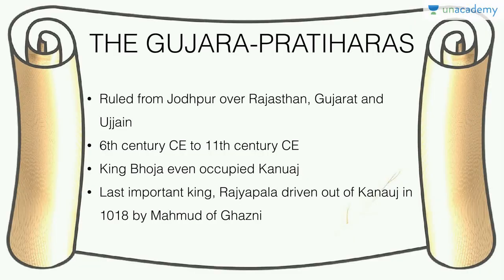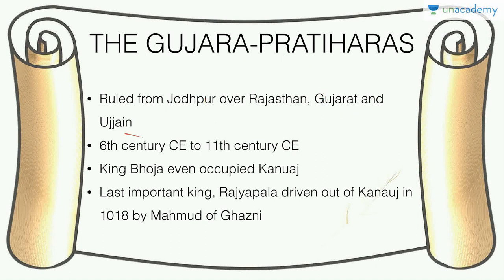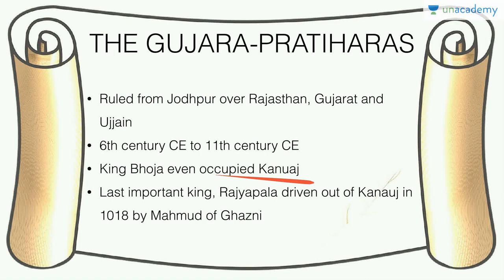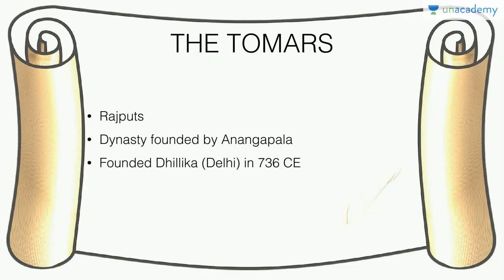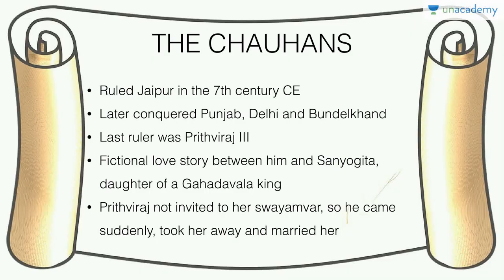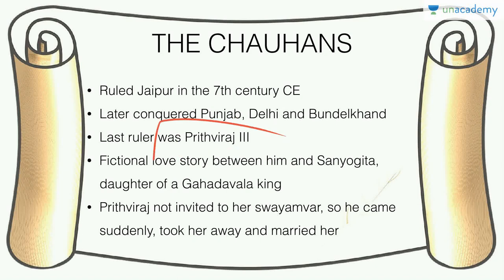The Gurjara-Pratiharas, also just called Pratiharas, ruled from Jodhpur over Rajasthan, extending to Gujarat and Ujjain from the 6th to 11th century CE. King Bhoja even occupied Kannauj. The last important king, Rajyapala, was driven out by Mahmud of Ghazni. The Tomars founded Delhi — their dynasty was founded by Anangapala. The Chauhans were Rajputs who ruled from Jaipur in the 7th century CE, later extending to Punjab, Delhi, and Bundelkhand. Their last ruler was Prithviraj Chauhan III, associated with the fictional love story of Sanyogita.